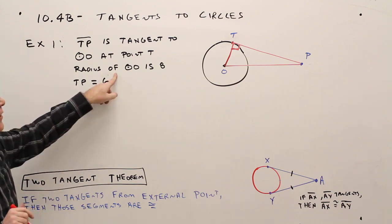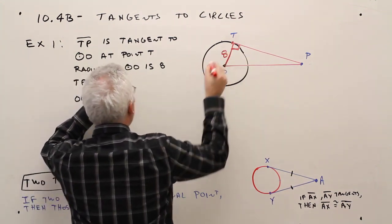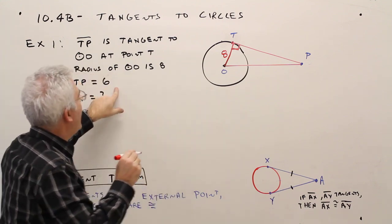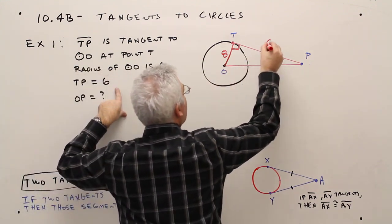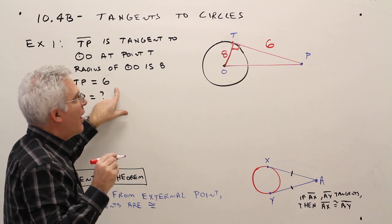So the radius is 8, so that means this is 8. TP is 6. TP is 6. I'm looking for OP.